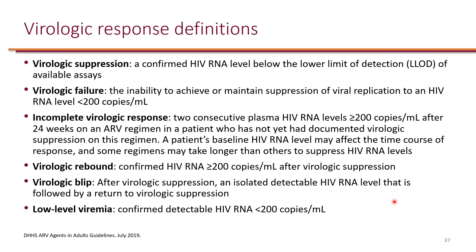Let's take a look at a few definitions. Viral suppression, by definition, is an HIV RNA level that is below the lower limit of detection of available assays. In clinical trials, this is usually considered a viral load less than 50 copies per mL.